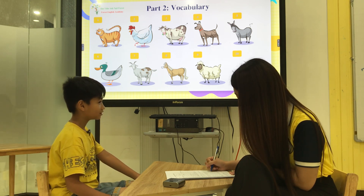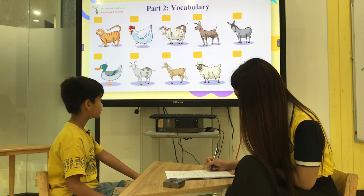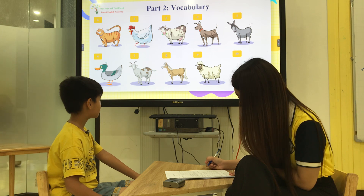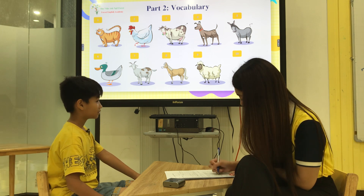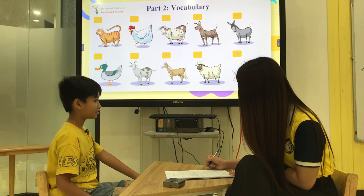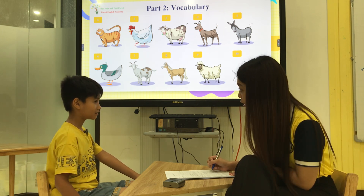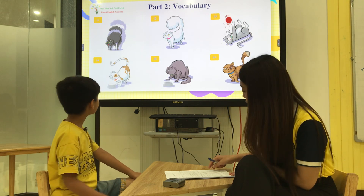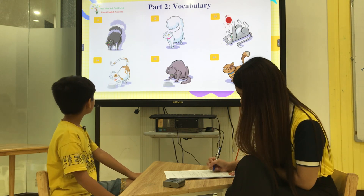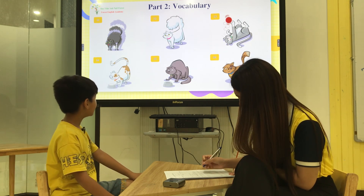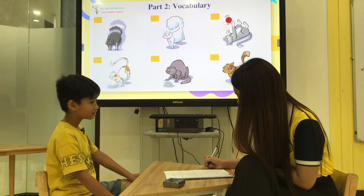Okay. Eight: horse. Nine. Six. Ten: spider. Eleven. Twelve.